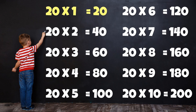Table of 20: 20×1=20, 20×2=40, 20×3=60, 20×4=80, 20×5=100, 20×6=120, 20×7=140, 20×8=160, 20×9=180, 20×10=200.